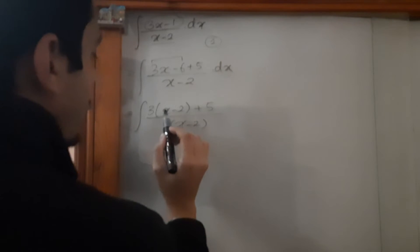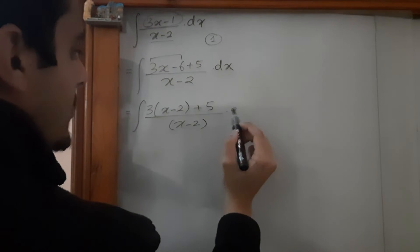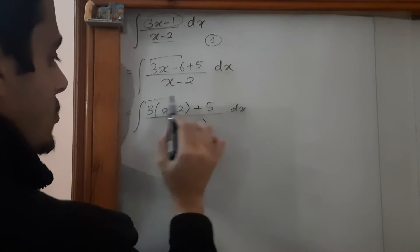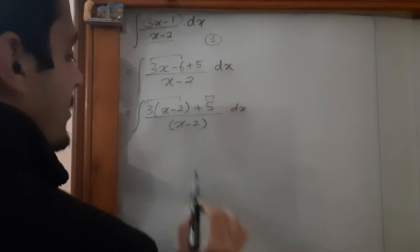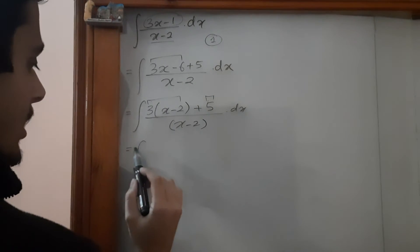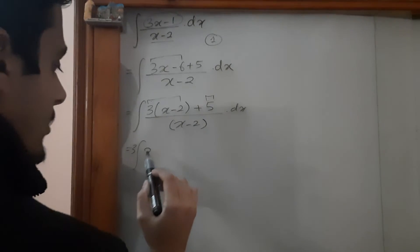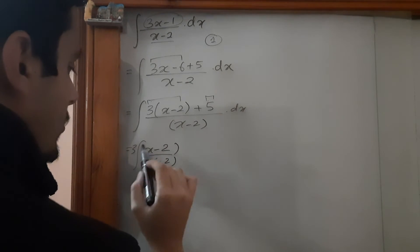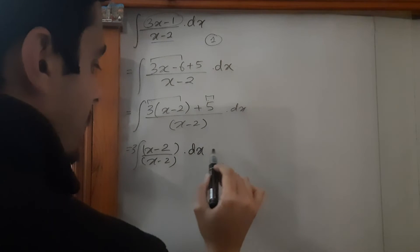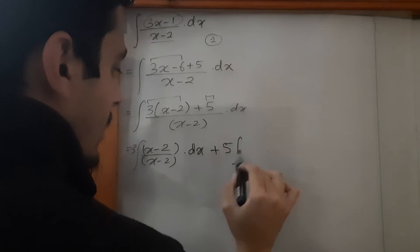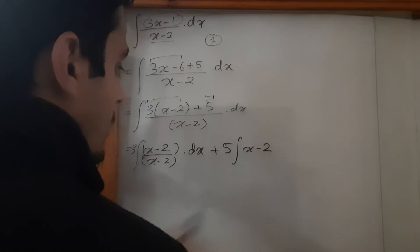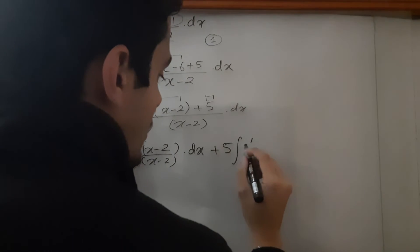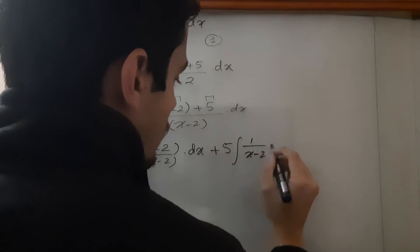We have (x - 2) in both places, so now let's split these two elements into different integrals. The 3 is a constant so it comes outside: 3 times the integral of (x - 2)/(x - 2) dx, plus 5 times the integral of 1/(x - 2) dx.